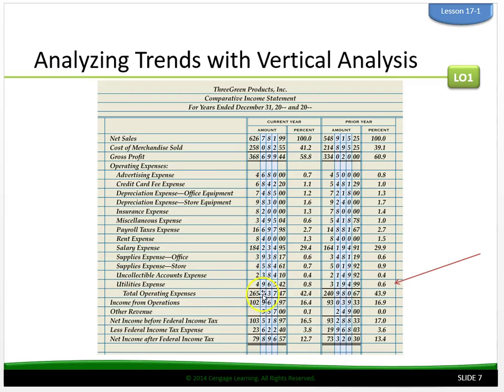Looking at utilities expense: the utilities expense has increased from 0.6% to 0.8% of net sales. This is also an unfavorable trend, and this can alert management to evaluate its energy policies and investigate payments posted to this account.